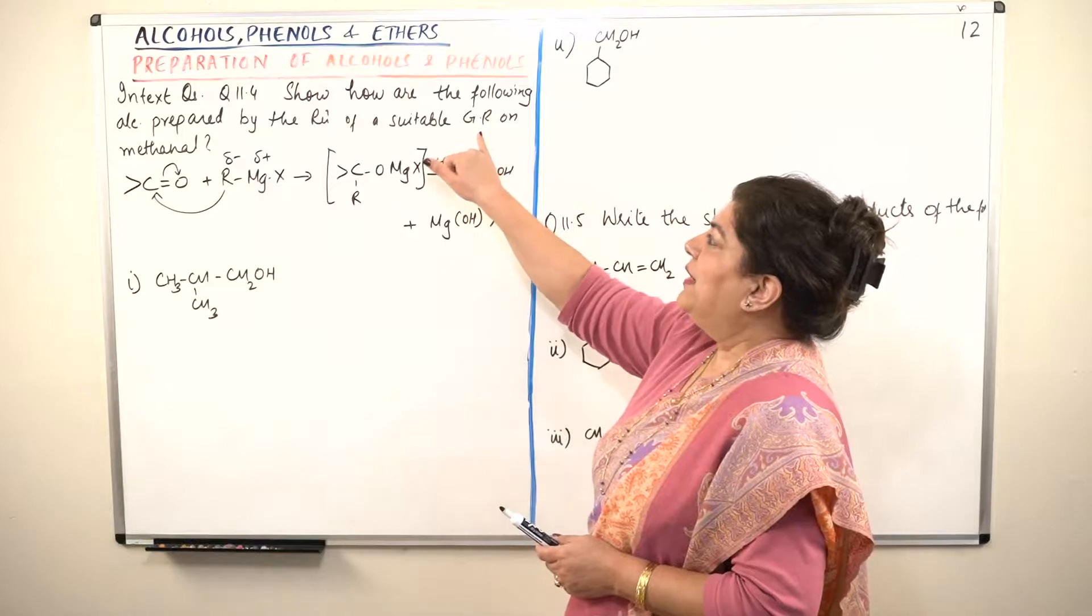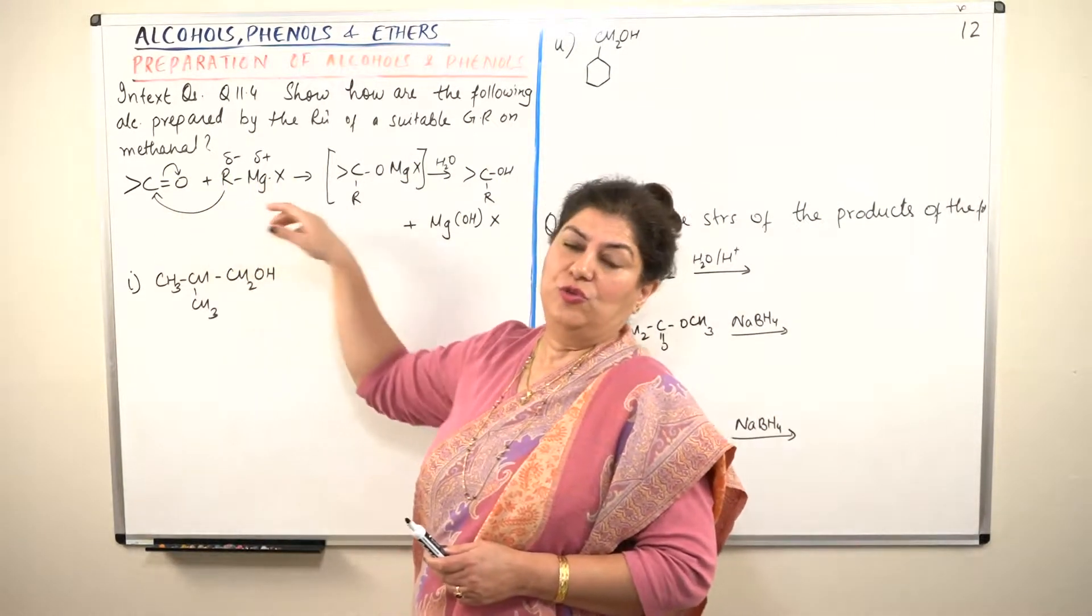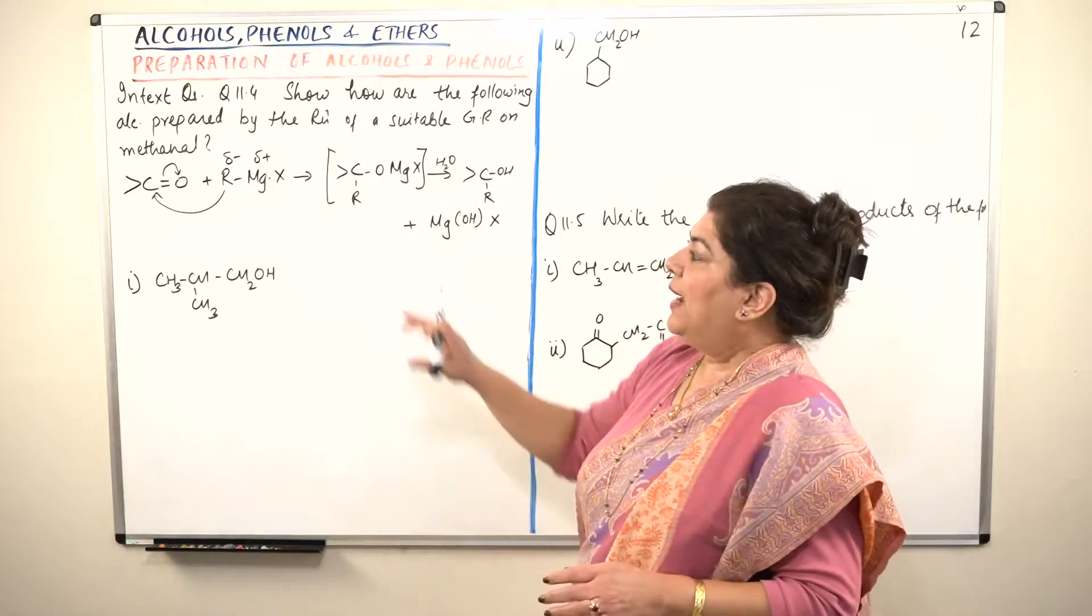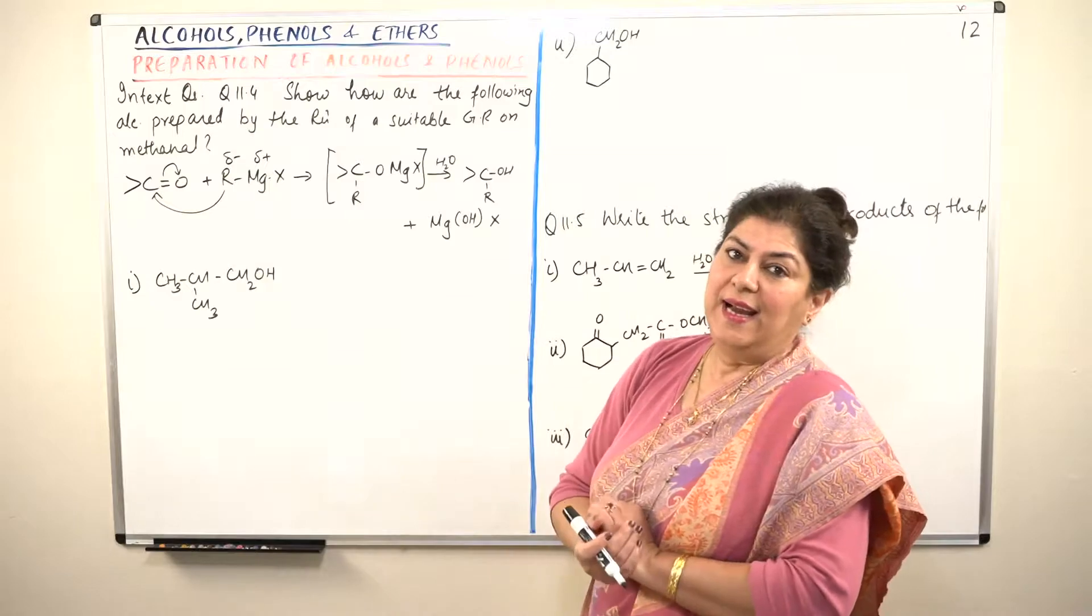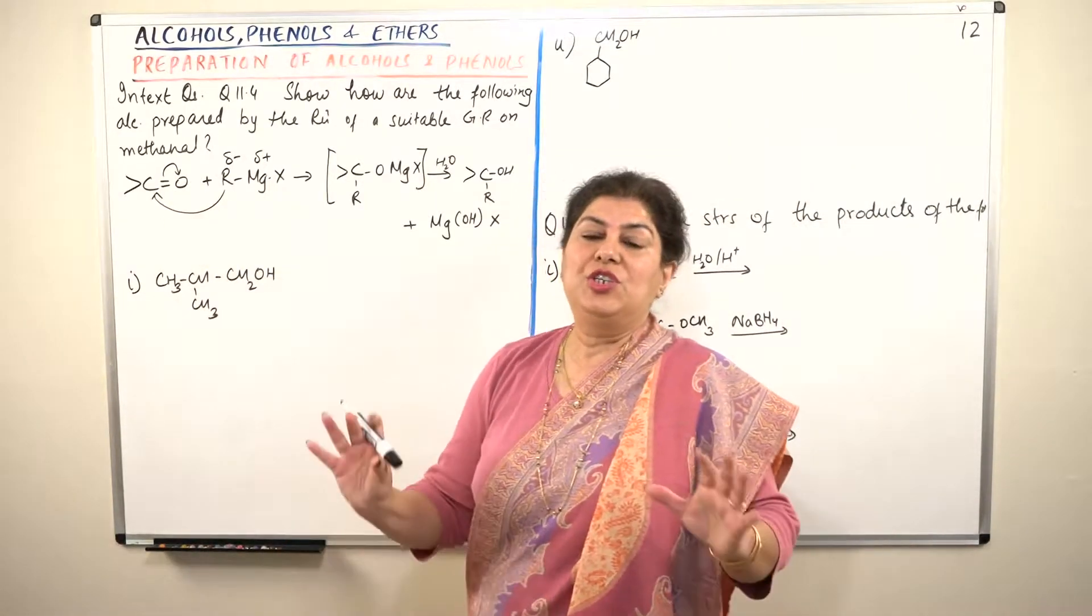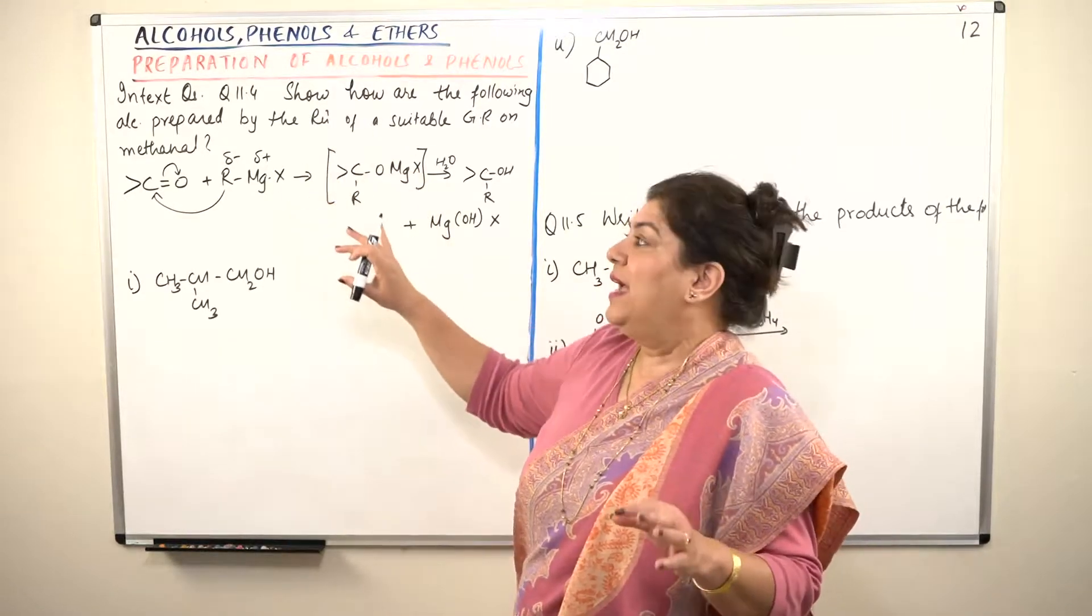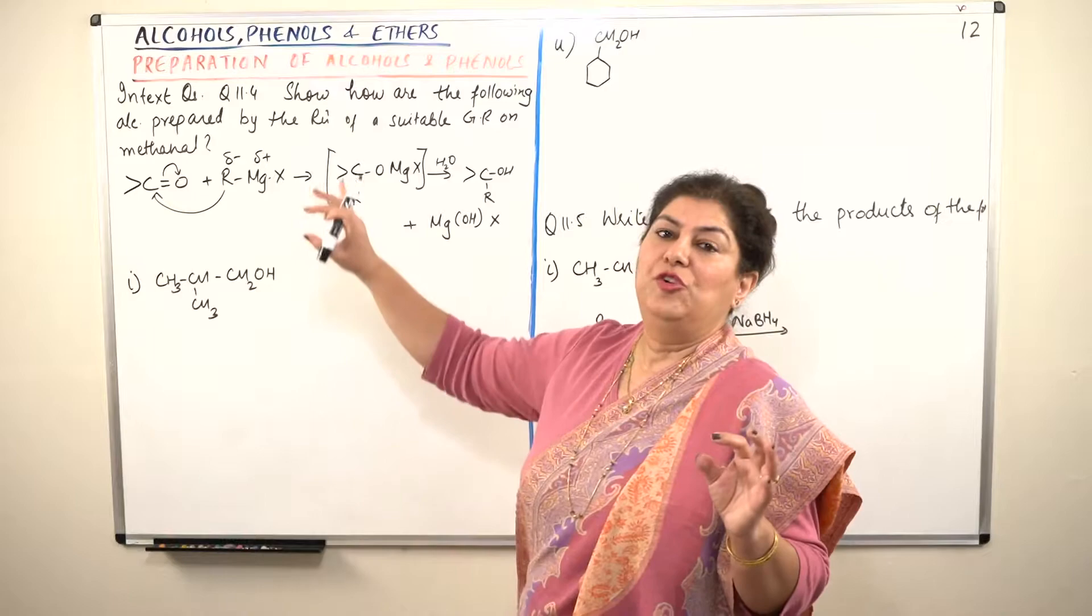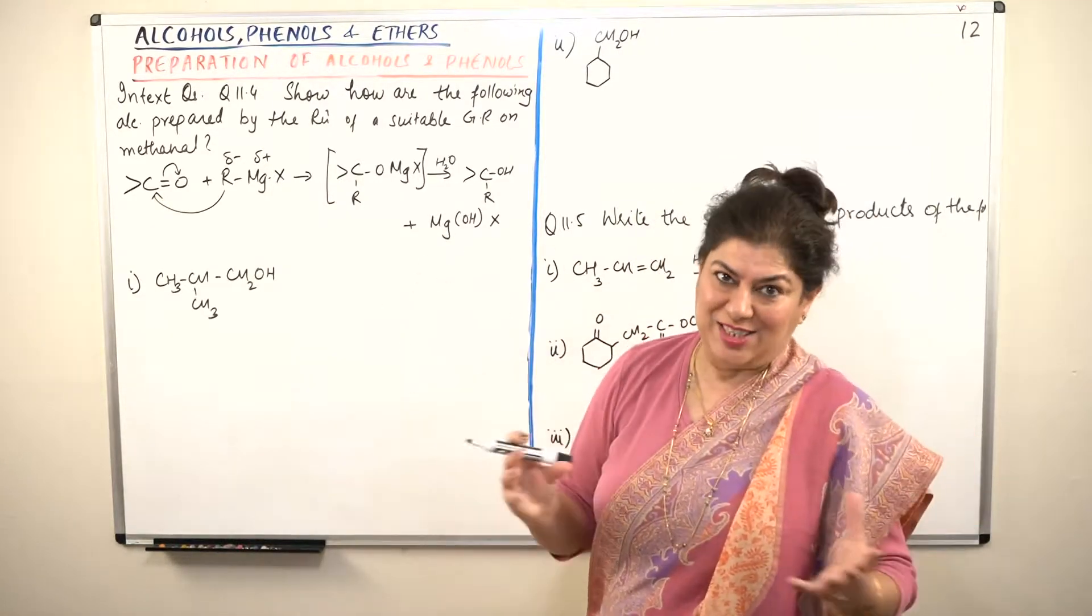We know that Grignard reagents react with aldehydes and ketones to produce alcohols. This is the general reaction that has been given because both in aldehydes and ketones there is a carbonyl group, the CO group which is basically where the Grignard reagent results in the formation of an adduct and the alkyl group from the Grignard reagent completes the molecule.